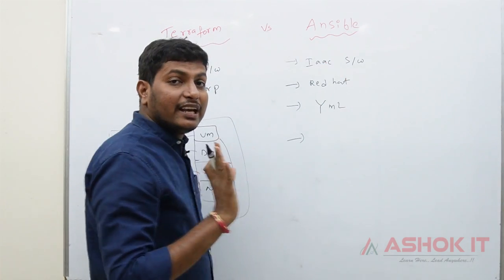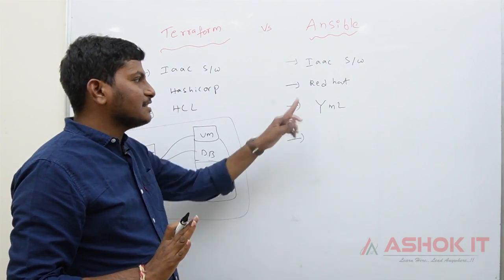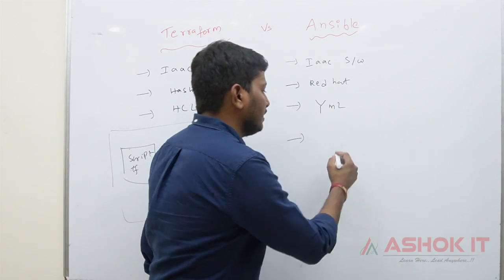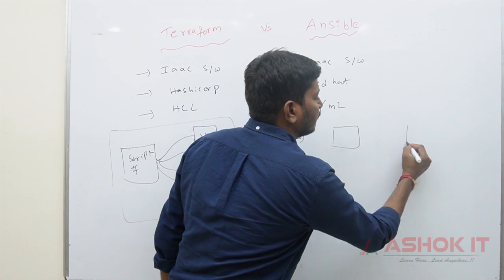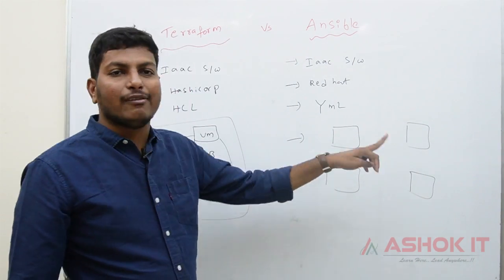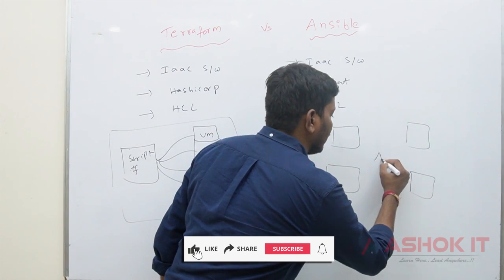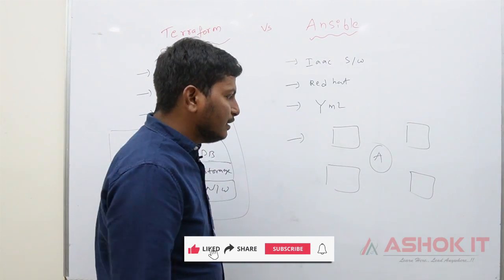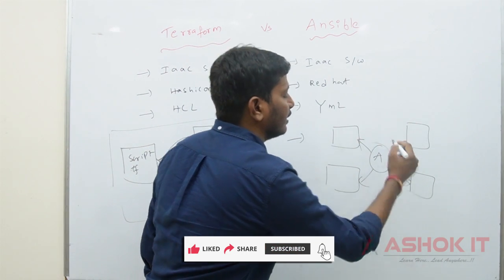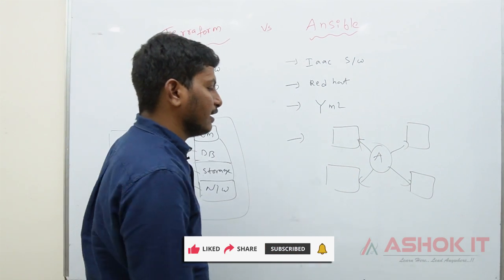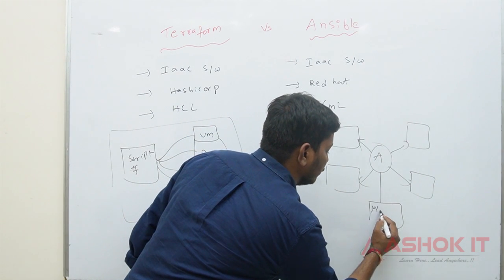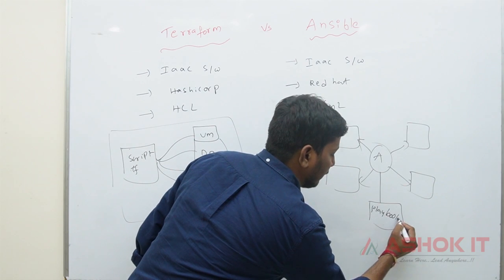Ansible is not for creating infrastructure — Ansible is used to manage configurations. For example, if you have four machines and want to install Java software on all of them, you can use Ansible. Ansible connects with those machines and installs the required software. To send tasks to those machines, Ansible uses a concept called a playbook.